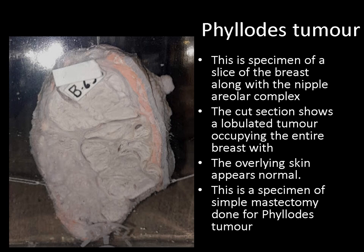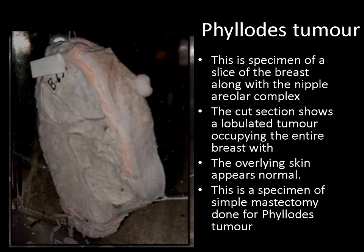Next is the specimen of the slice of the breast along with the nipple-areola complex. On the cut section, a lobulated mass occupying the entire breast is seen. The overlying skin is normal. And hence I call this specimen as a simple mastectomy specimen done for phyllodes tumor. There is no axillary tissue along with this specimen, so that is why this is a simple mastectomy specimen.